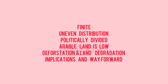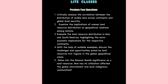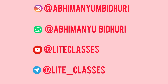In this video we covered various features of the distribution of land resources in the world: they are finite, fixed, and unevenly distributed, and have been politically divided into various units. Arable land around the world is low, with far-reaching consequences for food security and environmental conservation. We also discussed deforestation in the Amazon Basin and desertification especially in Africa, and the broader implications of land resource distribution and the way forward. In the next lecture we will talk about the distribution of land resources especially in India.